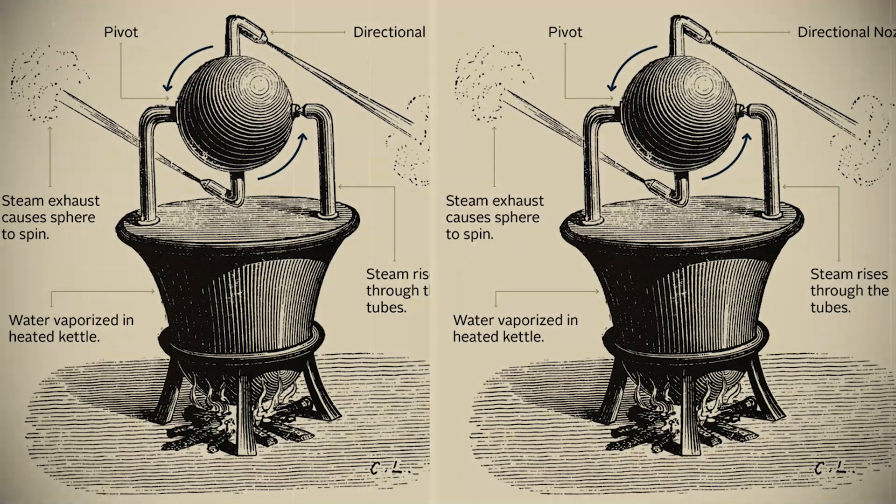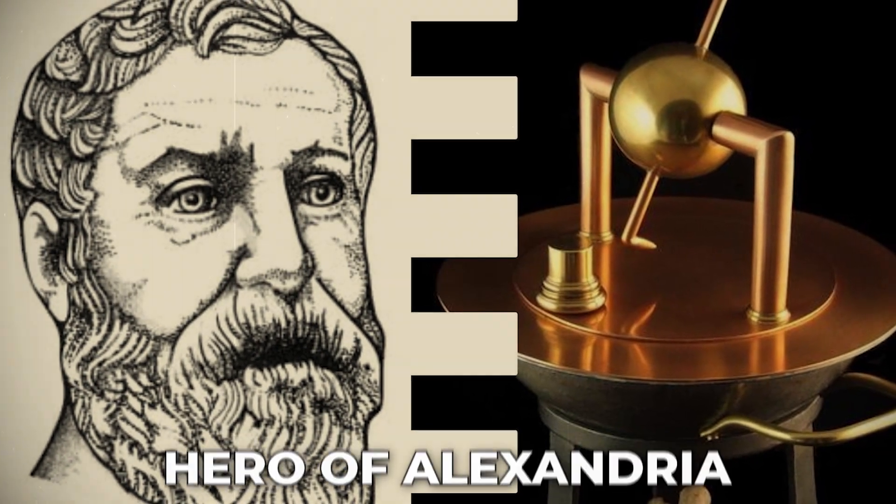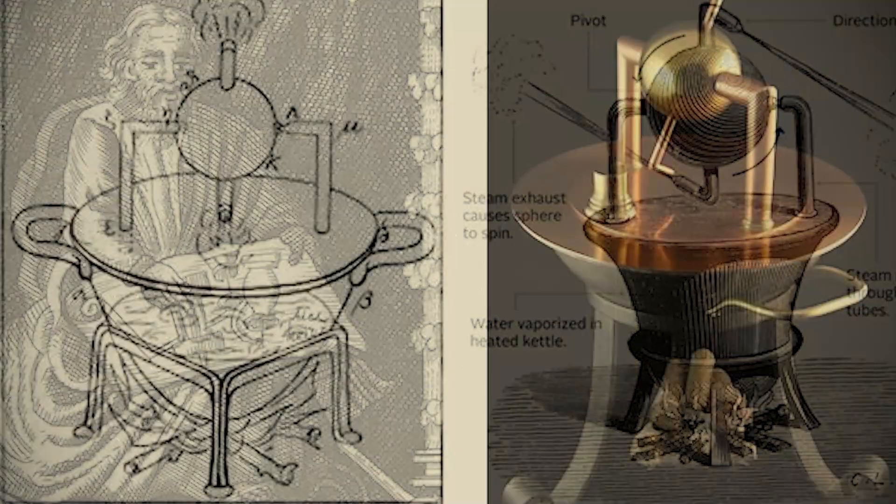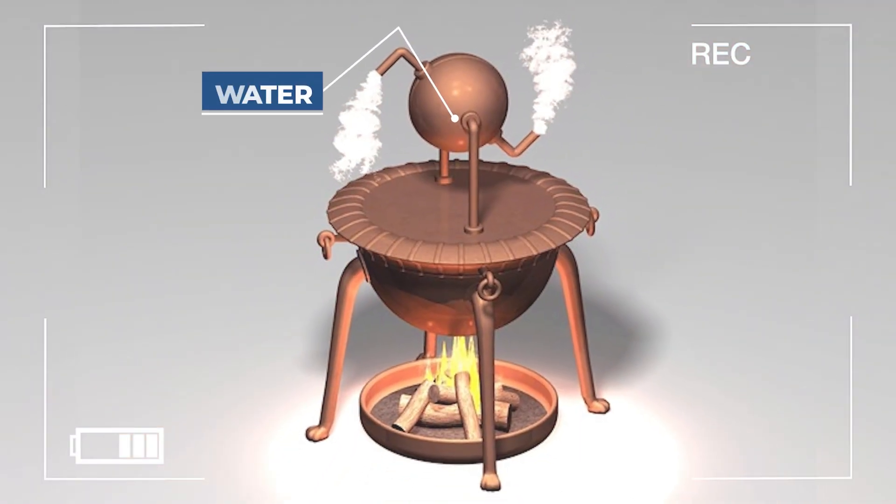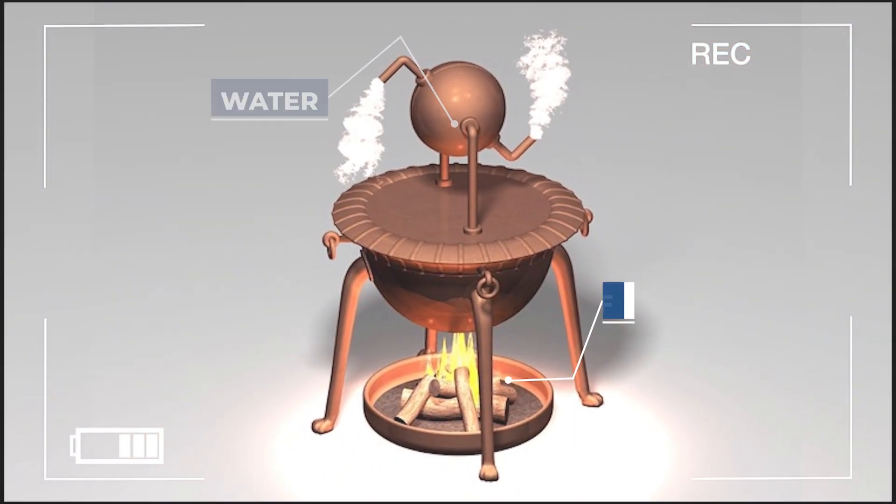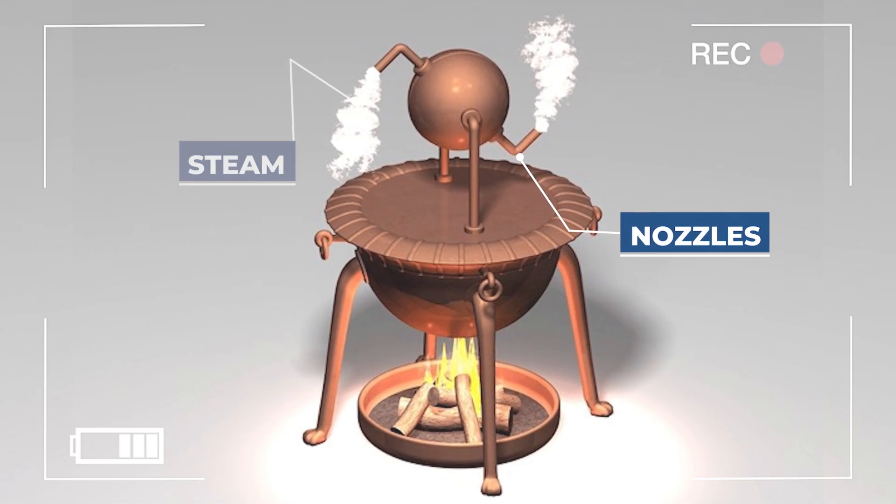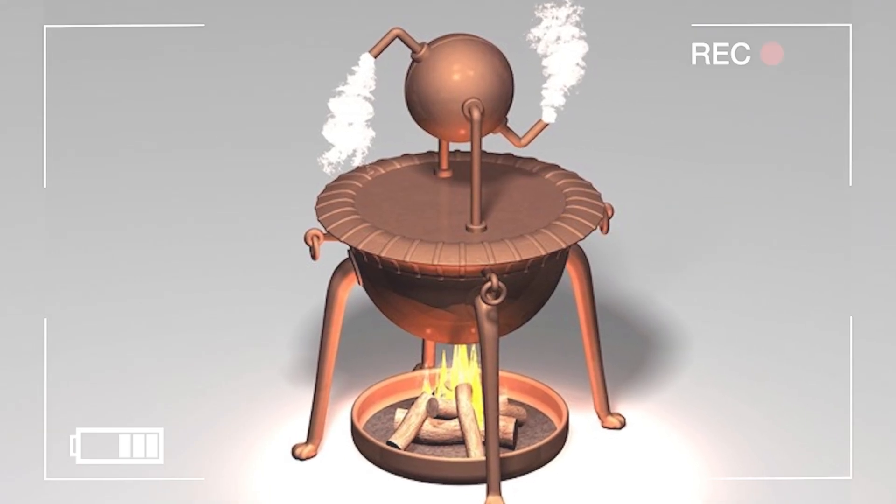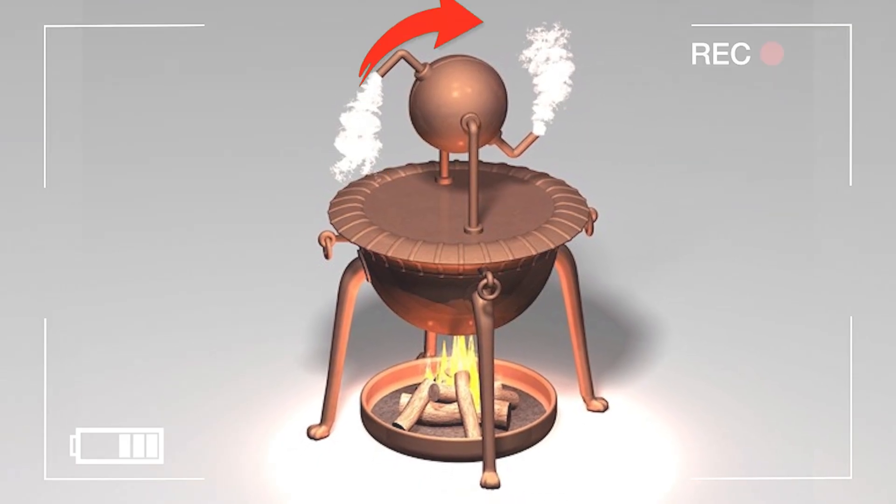The turbine story begins thousands of years ago. The first recorded design came from Hero of Alexandria, a Greek engineer from the first century AD. He built what many believe was the first steam turbine in history. It was simple but clever. You'd pour water inside a sealed container, heat it from below with a flame, and as the water turned to steam, that steam escaped through tiny nozzles on the sides of two curved arms. Those arms were arranged tangentially around a central axis and as the steam shot out, it made the whole device spin like a little rocket-powered sphere.